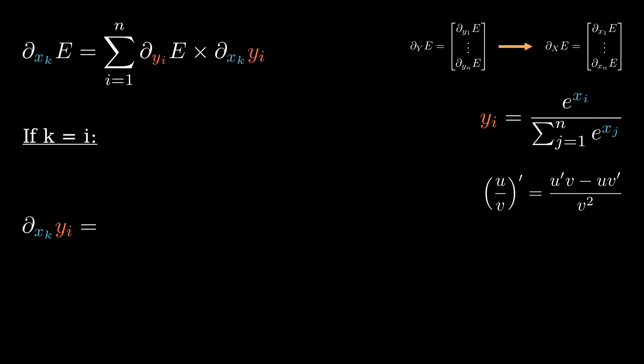If k is equal to i, then the numerator needs to be differentiated. Otherwise, it is just a constant. That's it for the first case. Now to the second, when k is different than i.